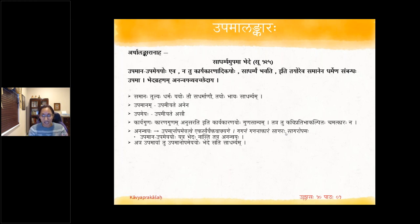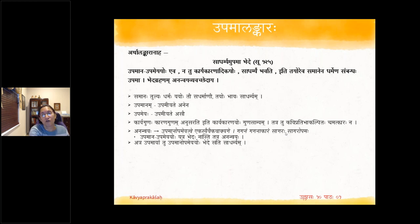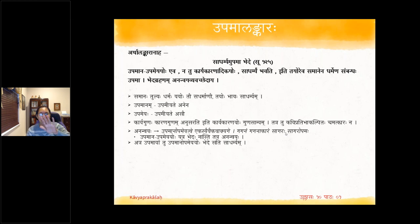The formal definition is: Sadharmyam Upama Bhede Sati — when there is a difference between Upamana and Upameya, along with similarity, it is Upama Alankara. When you look at Rupakam, based on that similarity you say Mukham Eva Kamalam — the face is the Lotus. That becomes Rupakam. Apannuti is where you negate: this is not the face, it is actually a Kamalam. In that manner, many different Alankaras are built from Upama.